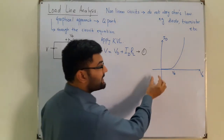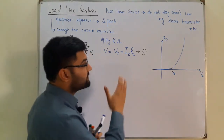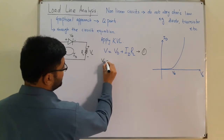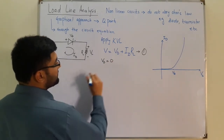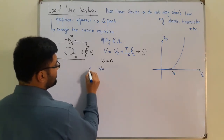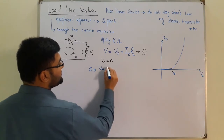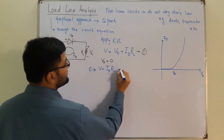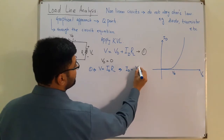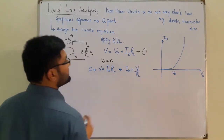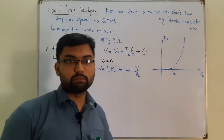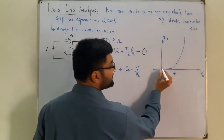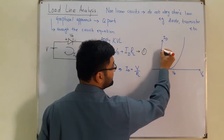To find the intercepts of the load line, first put VD = 0 in equation one. Then V = ID × RL, which gives ID = V / RL. This is the y-intercept — the point where VD = 0 and ID = V/RL.